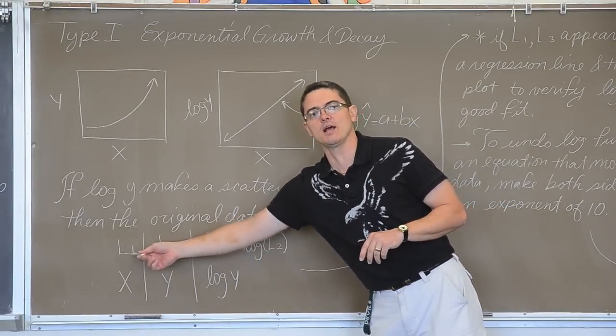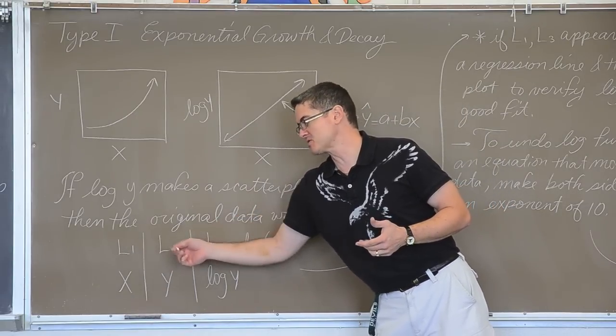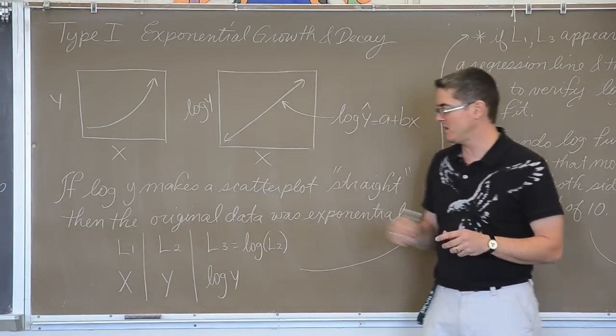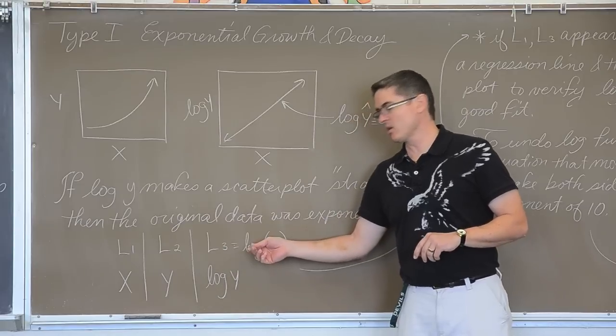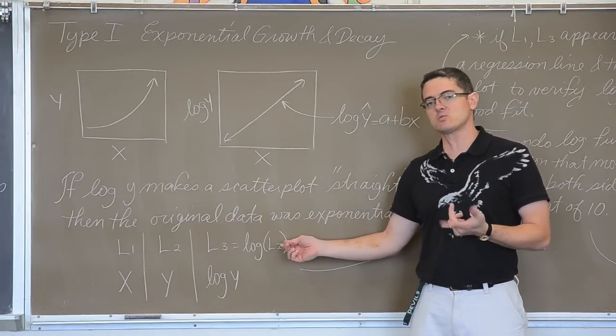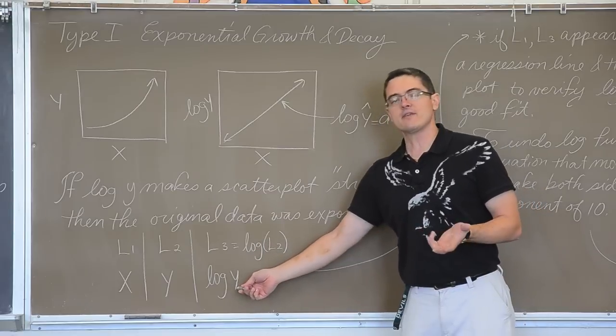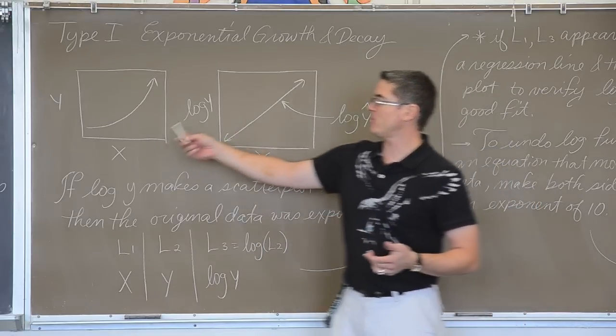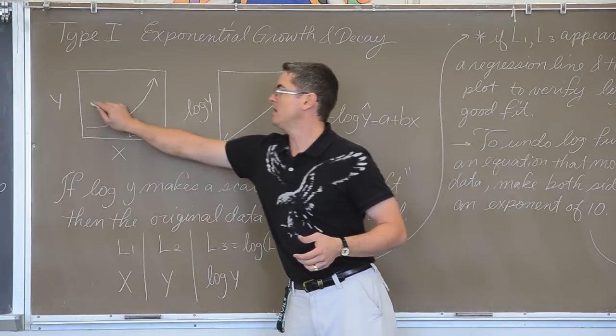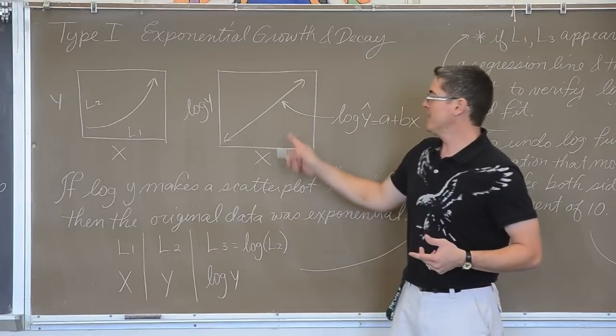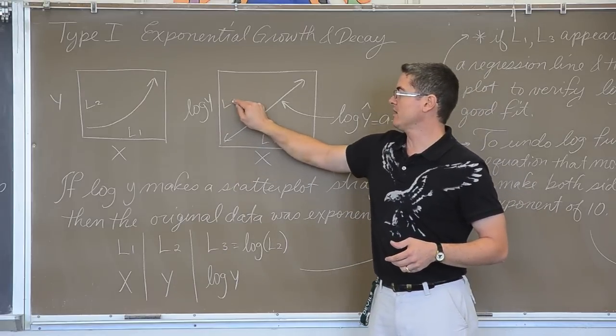In a TI-84 notation, you're going to add your x's and y's. They don't have to be list 1 and list 2, but that's just convenient. And then in list 3, we're going to take the log of the y values, which I have identified in list 2. So list 3 equals log of list 2. We have the log of the y values, so this scatter plot will be made by using list 1 and list 2, and this scatter plot with list 1 and list 3.